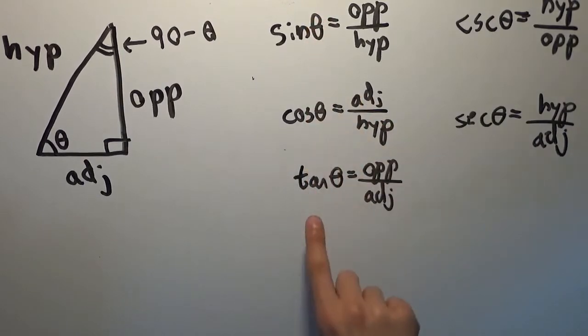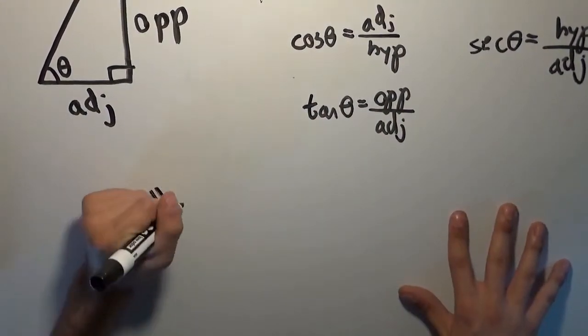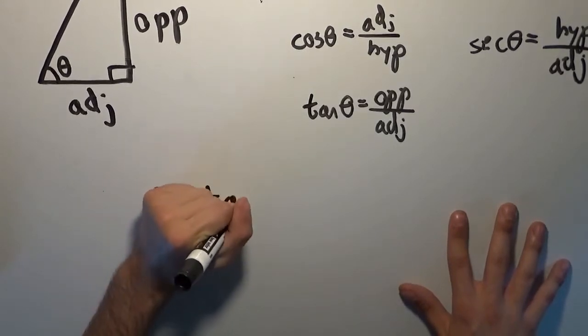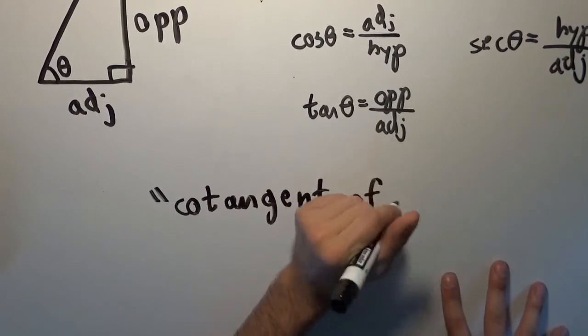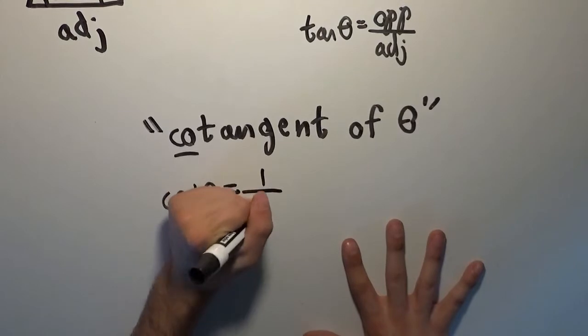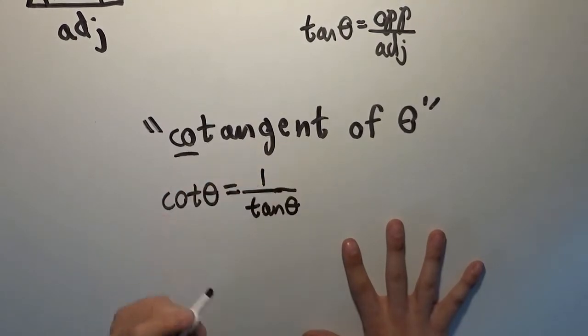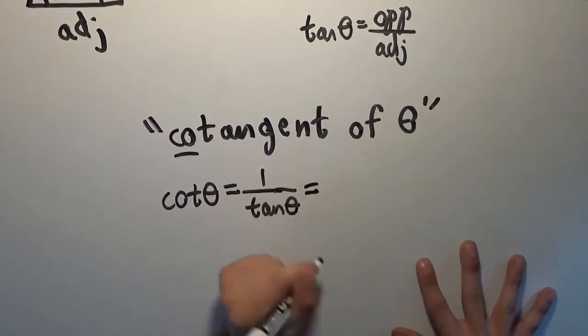We've done 1 over the sine, 1 over the cosine, now we just have to do 1 over the tangent. And this is called the cotangent of theta. It is defined to be 1 divided by the tangent of theta. Which means we have two more ways of representing that, in terms of other trig functions.